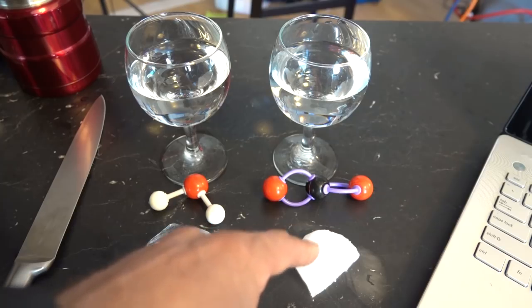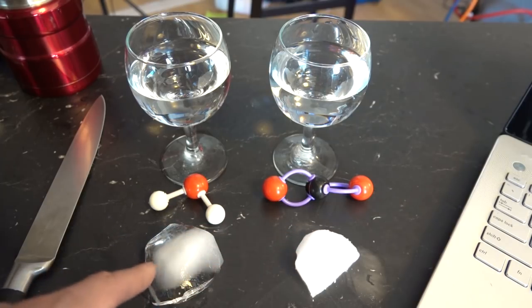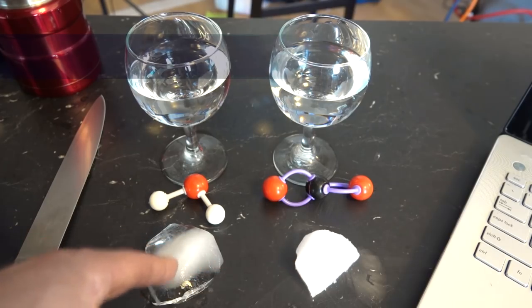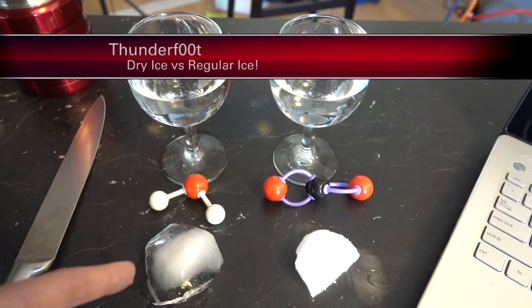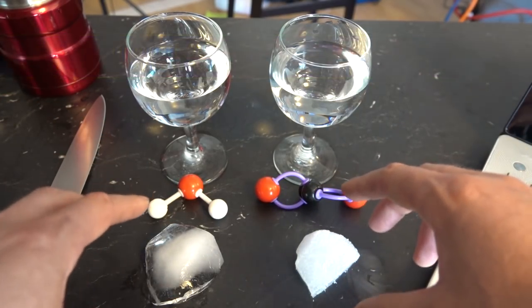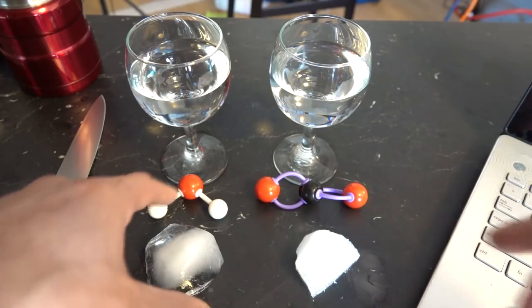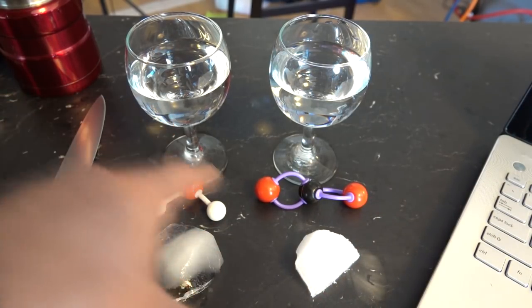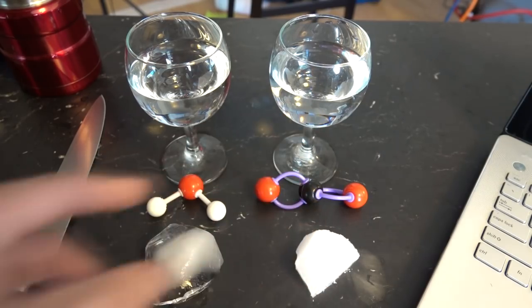So dry ice is actually a lot colder than regular ice. This is at about minus 80 degrees Celsius, whereas this is at freezing point, which is 0 degrees Celsius. There are other differences between these two molecules, most notably density. Water ice actually floats in water, whereas dry ice sinks in water.